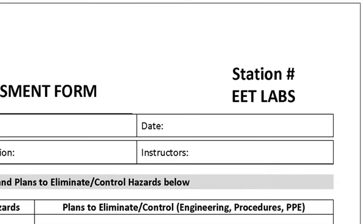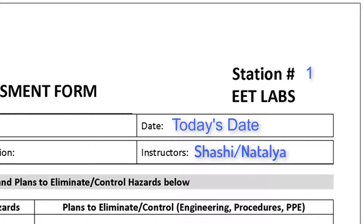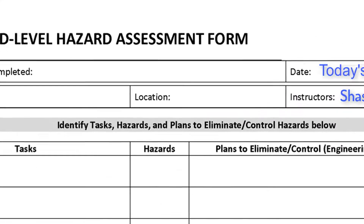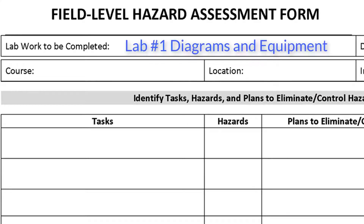To begin, you need to enter your workstation number. This number will also correspond with the number on your LabVolt Council. Next, fill in the current date — this is the date that you are starting your lab. Record the names of your instructors. For the work you are going to complete, enter the lab number and name, the course code, and also the room number of the lab you are working in.